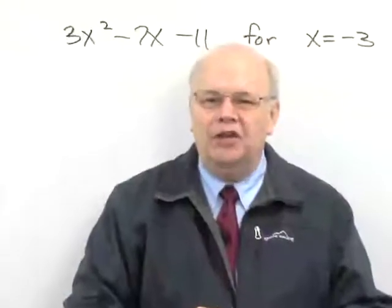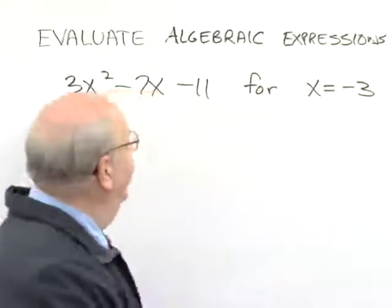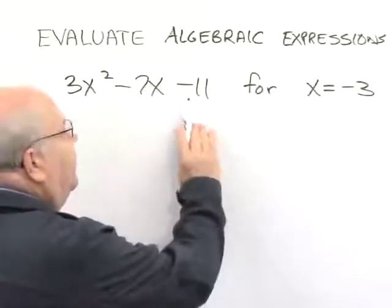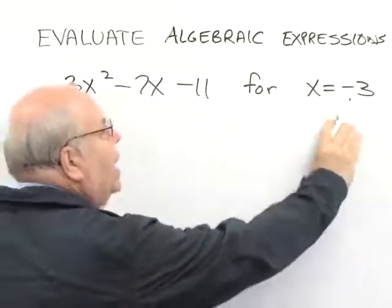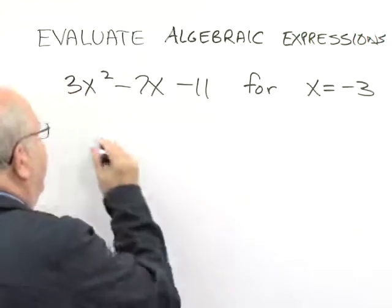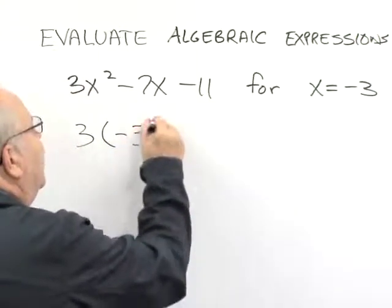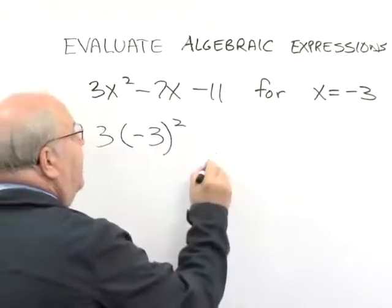Now let's see how we would actually perform this problem. We want to evaluate 3x² - 7x - 11 for x = -3. As we write it down, we want to put a parentheses around the -3.